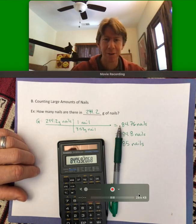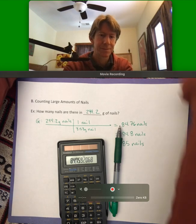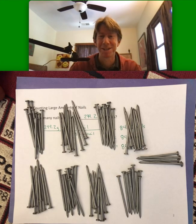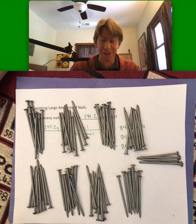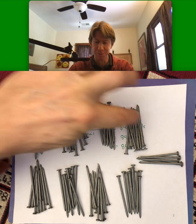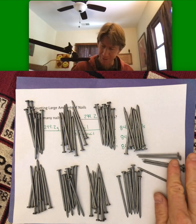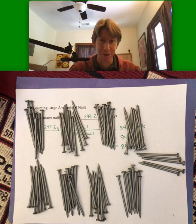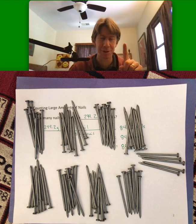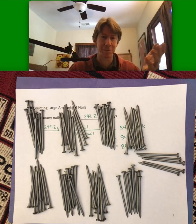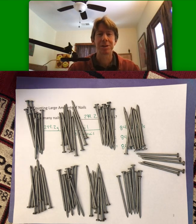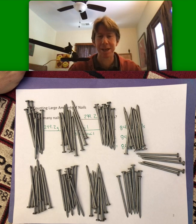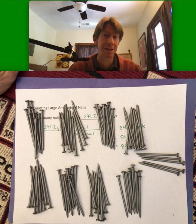I'm going to pause the video and actually count them to see how we did. It turns out there are exactly 85 nails — each group is 10, so we have 8 groups of 10 and 5 nails left over. This is an analogy to counting by mass: you can count small things, even nails, by taking the mass of one, using it as a unit conversion factor, and then using the total mass from a scale. Hopefully this is proof of concept and gives a bit more understanding of how we count by mass.